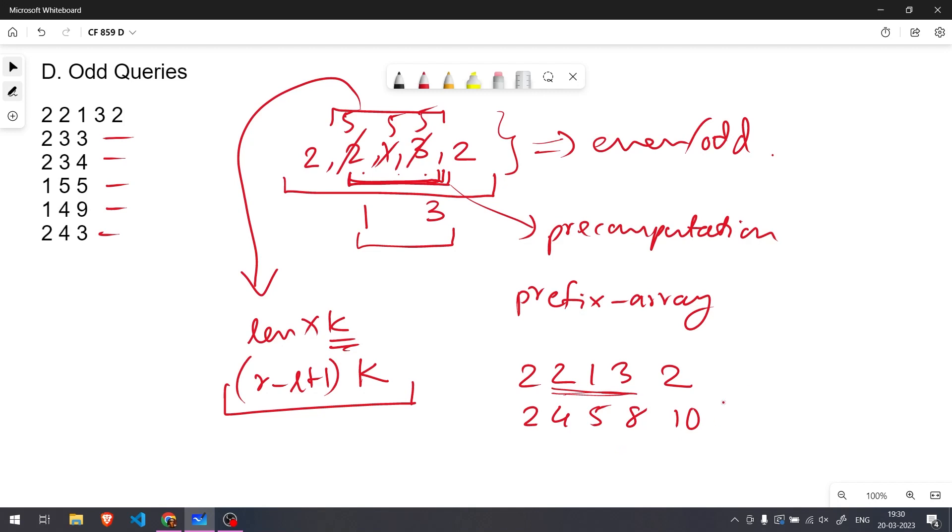Is we take prefix array of R and subtract prefix array of L minus 1. So we take 8 and subtract 2. So 8 minus 2 is 6 and that is the sum of this range. So this is how we get the part to be subtracted.